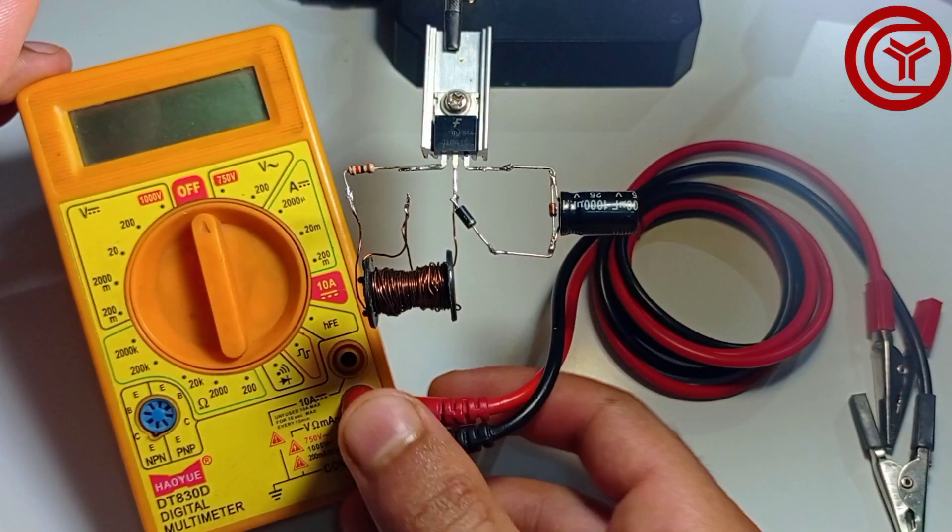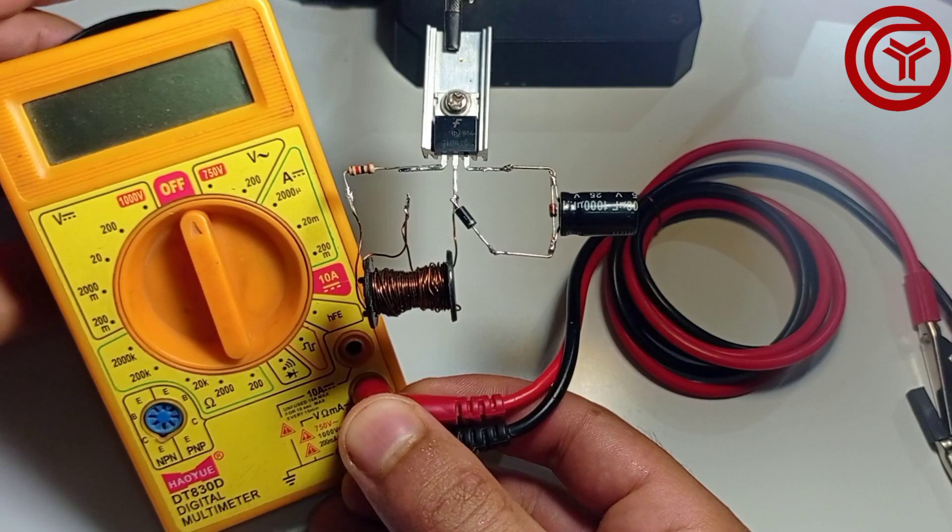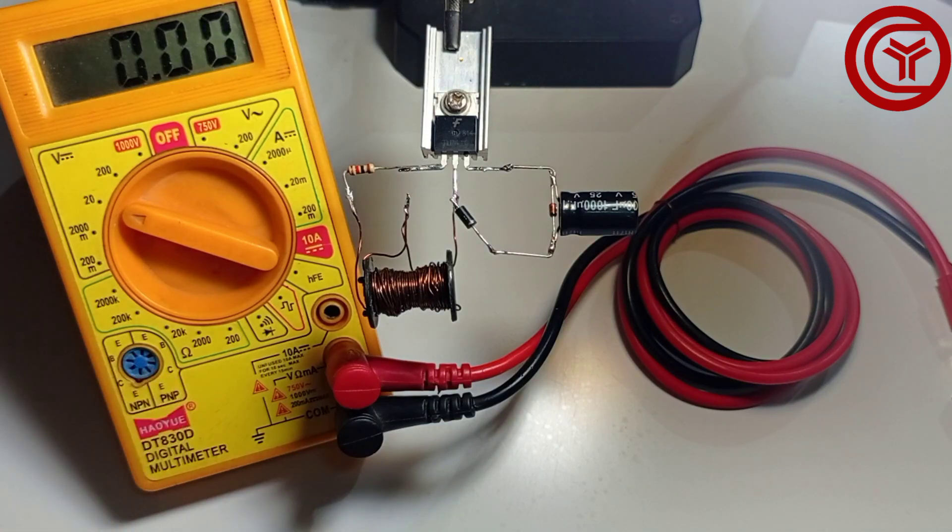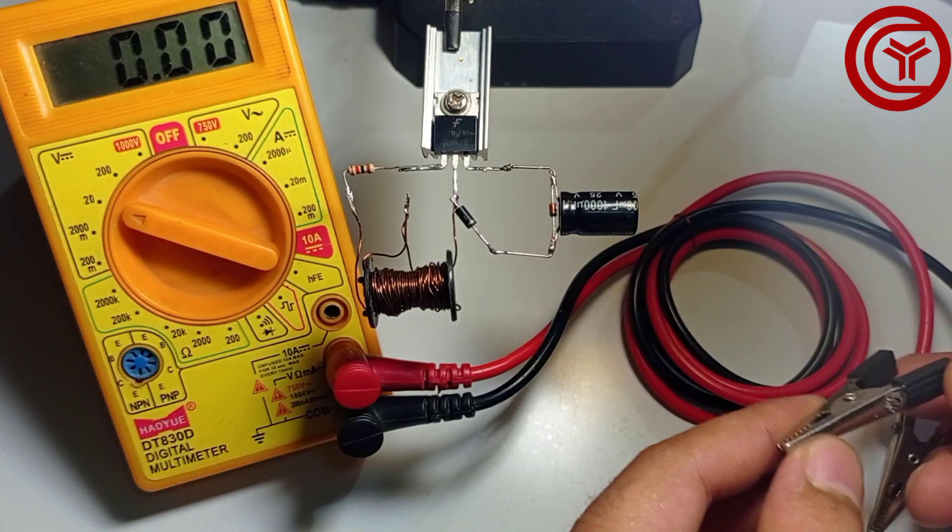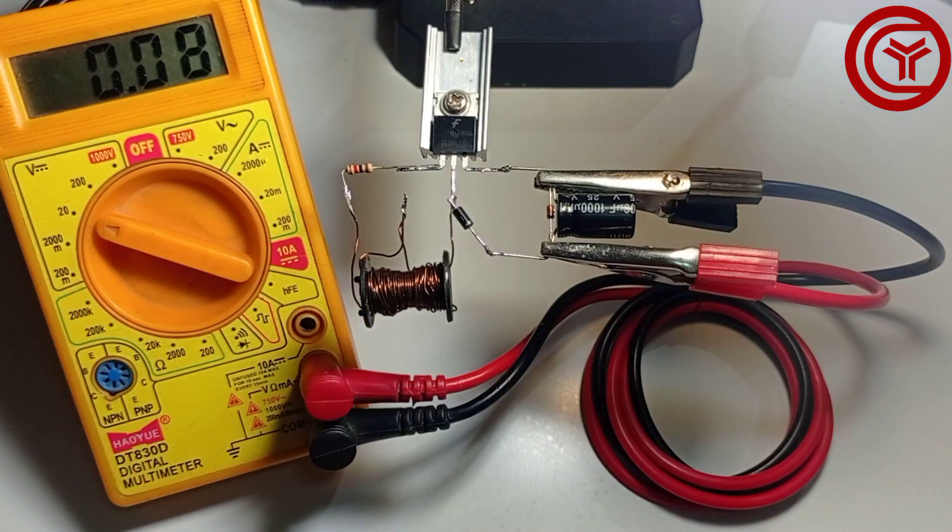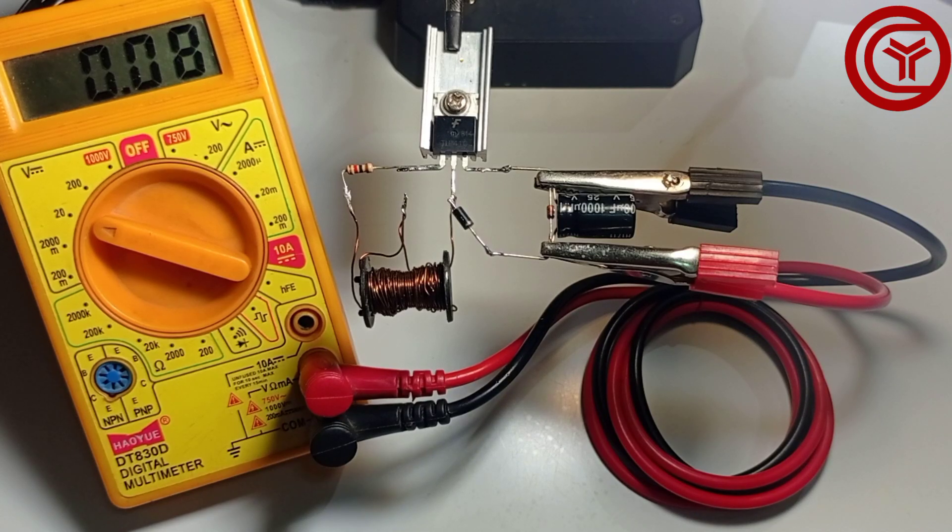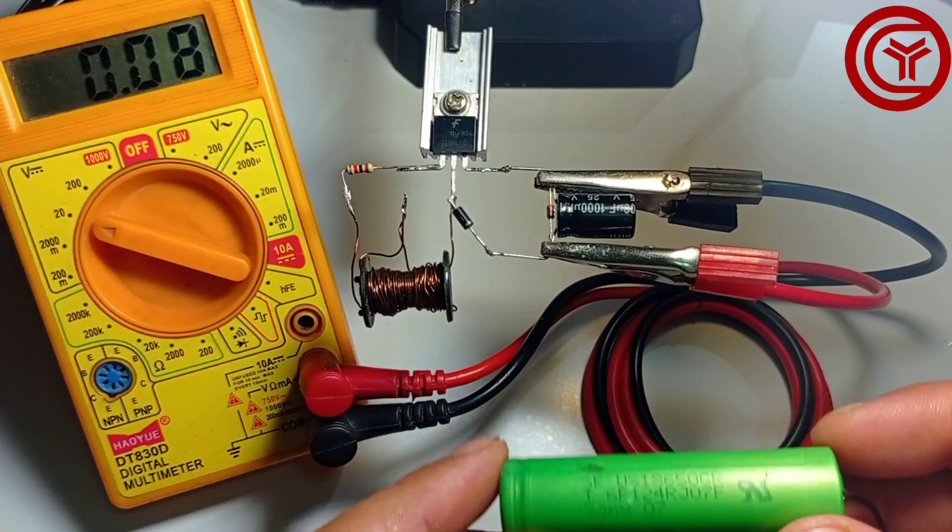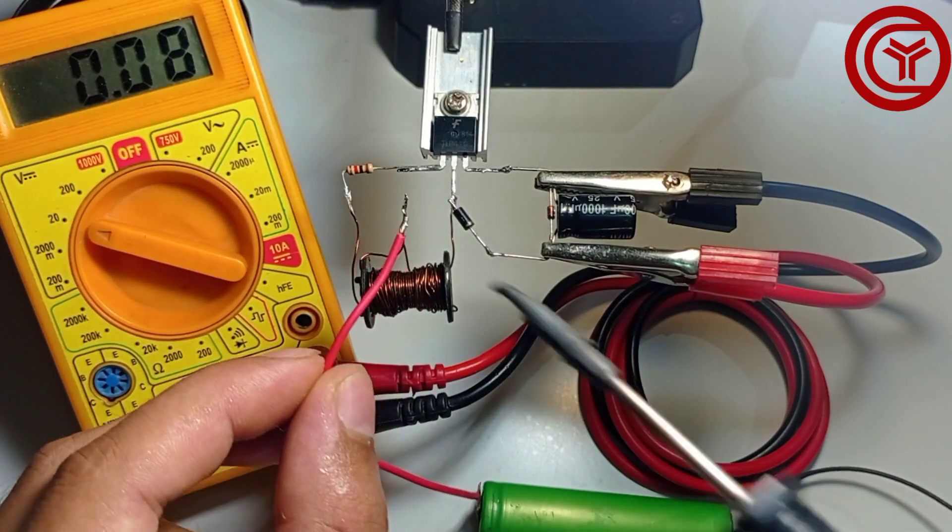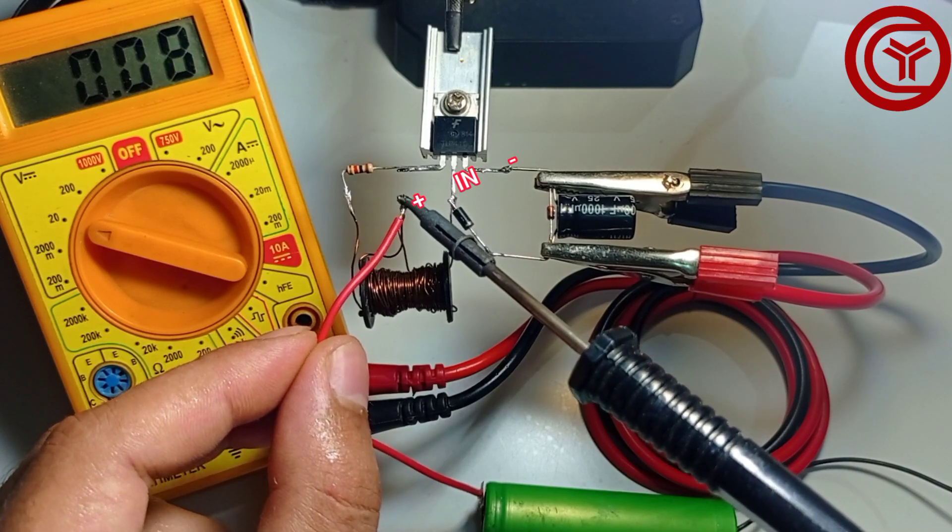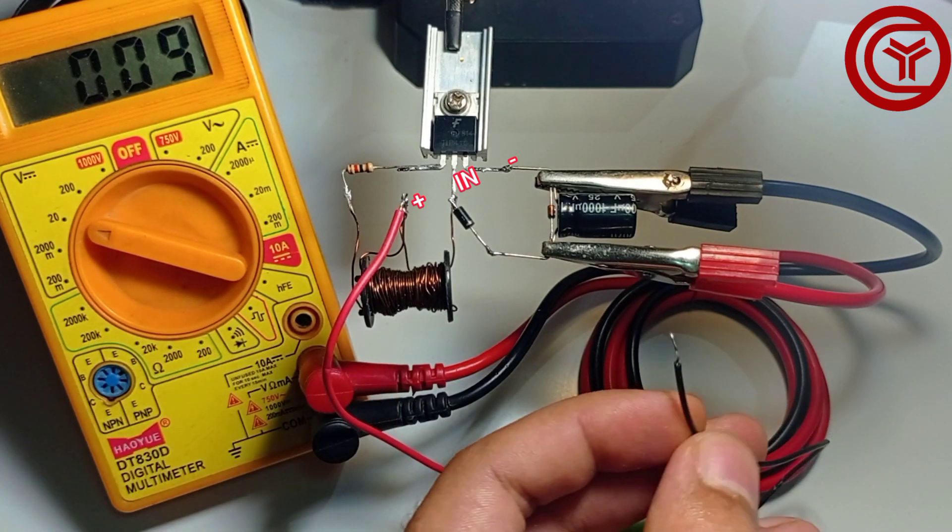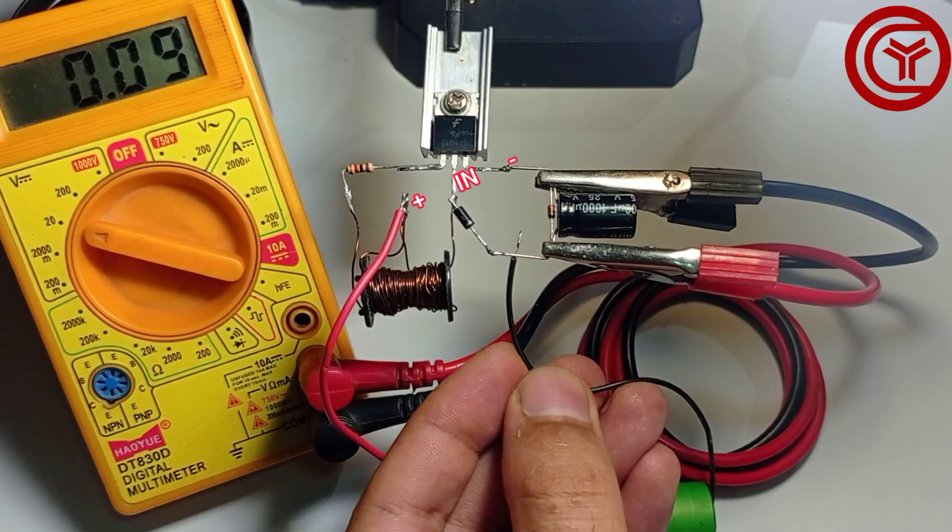I will connect multimeter on output to check output voltage. Now I will connect 3.7 volt cell. Connect positive on center loop wire and connect negative on emitter of transistor.